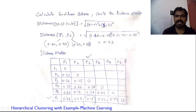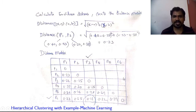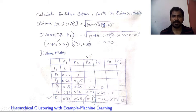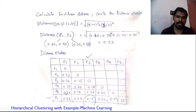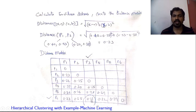Computing all pairwise distances gives the full distance matrix. For example, distance between p2 and p3 is 0.15. The lower triangle remains empty because values are symmetric. Once all distances are computed, find the minimum value — which is 0.11 — and merge those two points, p3 and p6, into one cluster.